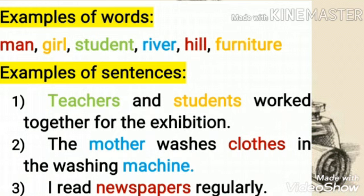First one: Teachers and students worked together for their exhibition. Second one: Mother washes clothes in the washing machine. Third one: I read newspaper regularly. Here, 'teachers' and 'students' didn't refer to any particular person — they denote all members. And 'mother,' 'clothes,' 'machine,' 'newspaper' — these words are also called common nouns.